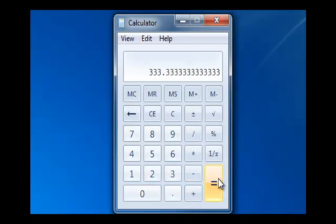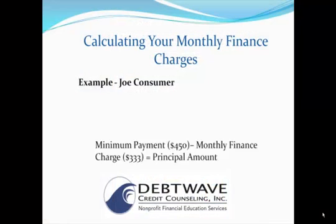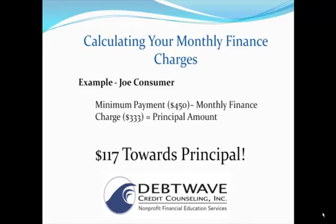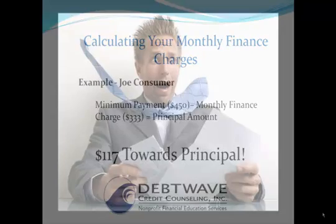So, again, minimum payment minus the finance charge gives us the principal. That means in Joe Consumer's case, only $117 of that $450 payment is going towards the principal, or in more common terms, your balance.